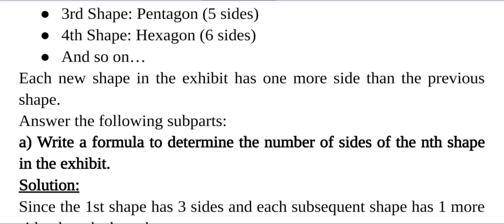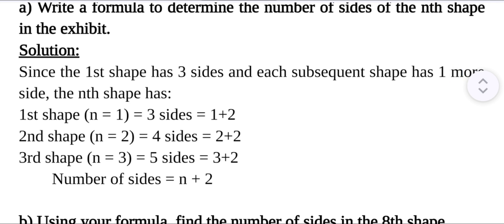Now answer the following subparts. Write a formula to determine the number of sides of the nth shape in the exhibit. Solution: Since the first shape has 3 sides and each subsequent shape has one more side, the nth shape has, for first shape when n = 1, 3 sides, which is equal to 1 + 2.